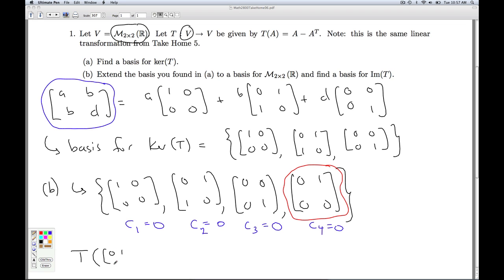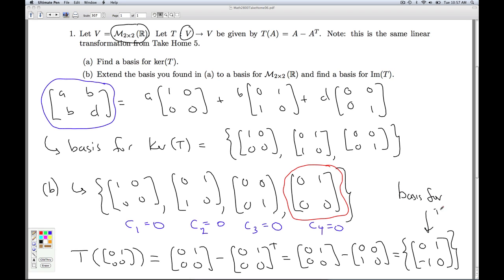So I take T of this matrix. That's this matrix minus its transpose. So it's [0,1,0,0] minus [0,0,1,0], which is [0,1,-1,0]. So this is a basis for the image of T.